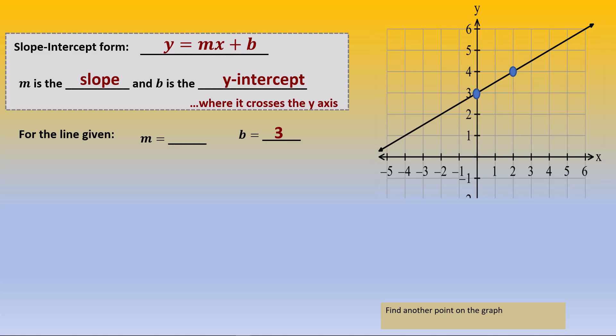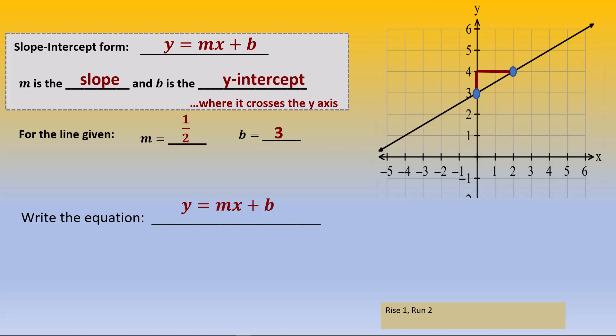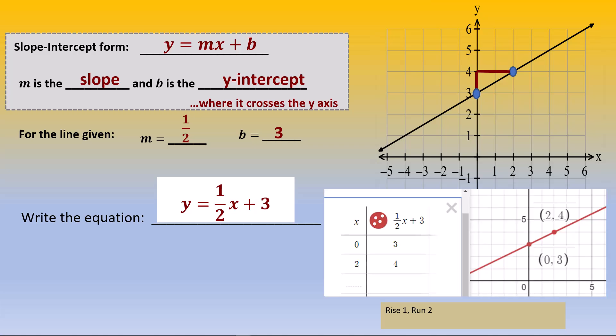Counting the rise and the run, we see that the rise is 1 and the run is 2. And so the slope is 1 over 2; m equals 1 over 2. To write the equation, just substitute m and b with the values you just determined, and you have y equals 1/2 x plus 3. You can see the result in Desmos for further proof.